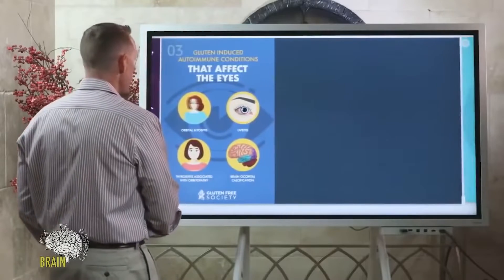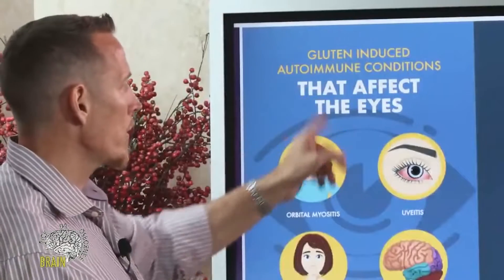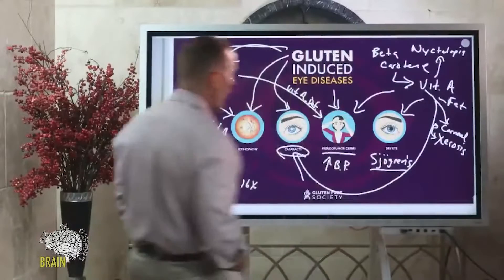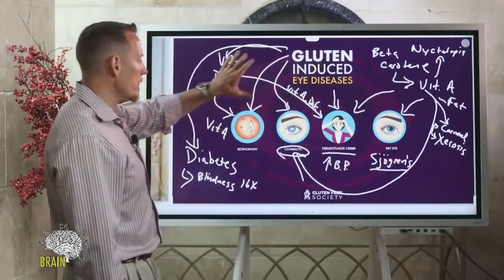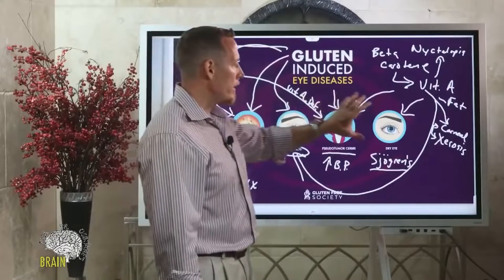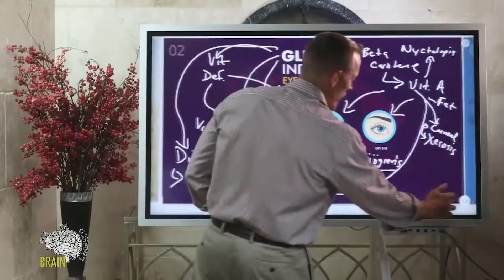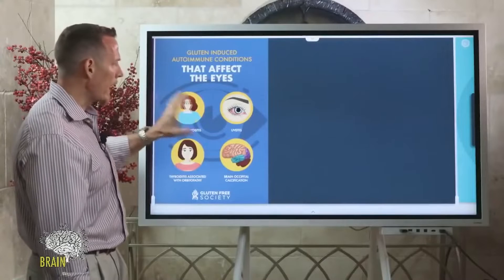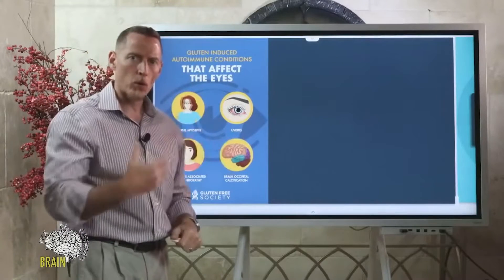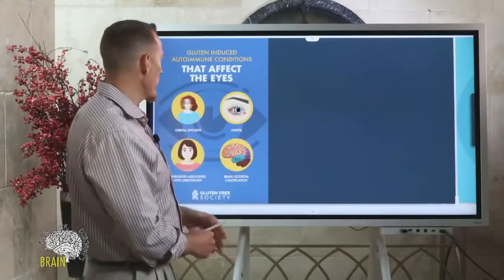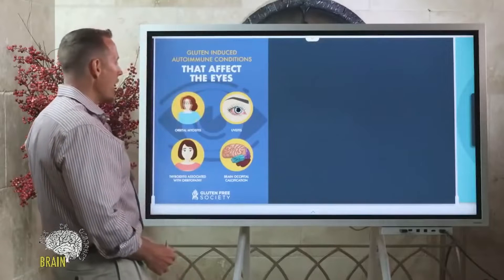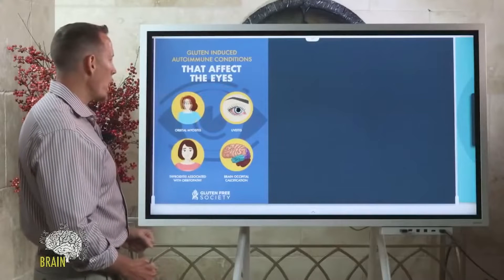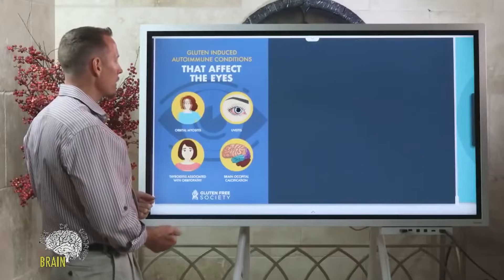Moving on, let's talk about some of the gluten-induced autoimmune conditions that affect the eye. There are two kinds of things to think about here. The previous category was gluten-induced diseases typically through malnutrition, but this next category involves autoimmune diseases that gluten can contribute to — think of this as more indirect, whereas the other was more direct.